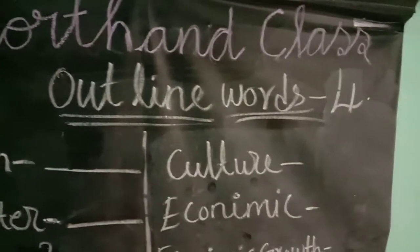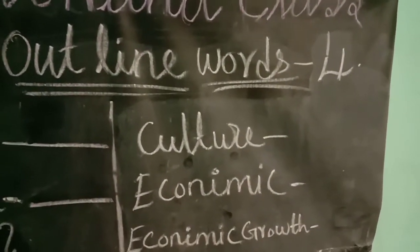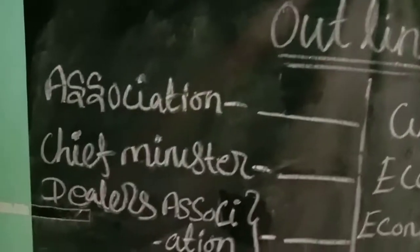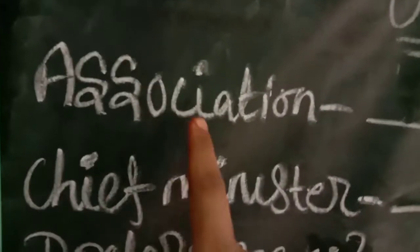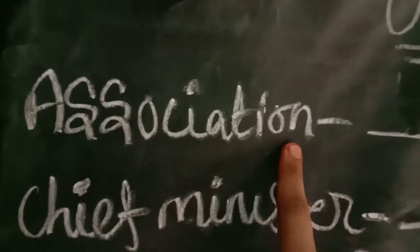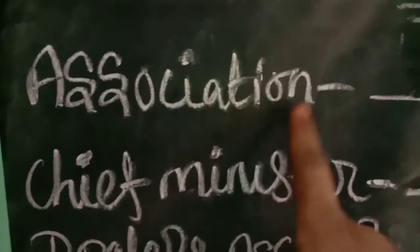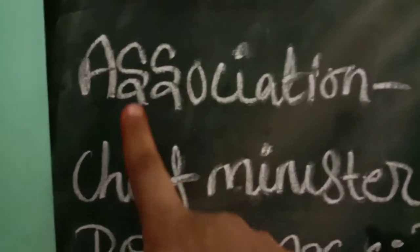This is the Sardern class in Outline Vals. Let's talk about the Association. The Association means that the S is the same as the S stroke. This is the Association.